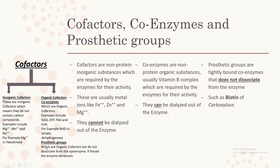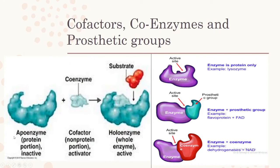If prosthetic groups are forced to dissociate from the enzyme, they will cause the enzyme to denature — meaning it will change shape, and once its shape is changed the active site is also altered, making the enzyme unable to bind to its substrate and rendering it useless. The apoenzyme — the protein portion — means the enzyme is now inactive.